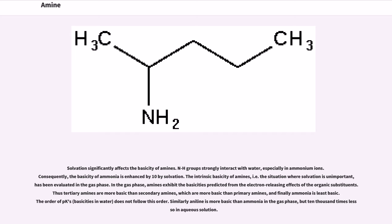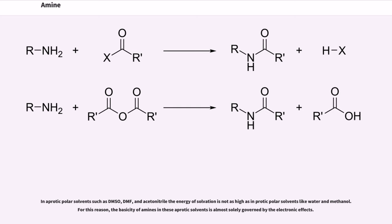In the gas phase, amines exhibit the basicities predicted from the electron-releasing effects of the organic substituents. Thus, tertiary amines are more basic than secondary amines, which are more basic than primary amines, and finally ammonia is least basic. The order of pKa basicities in water does not follow this order. Similarly, aniline is more basic than ammonia in the gas phase, but 10,000 times less so in aqueous solution. In aprotic polar solvents such as DMSO, DMF, and acetonitrile the energy of solvation is not as high as in protic polar solvents like water and methanol. For this reason, the basicity of amines in these aprotic solvents is almost solely governed by the electronic effects.